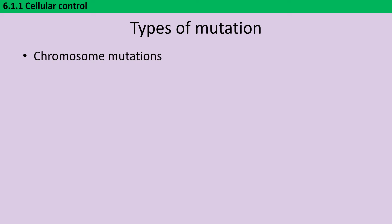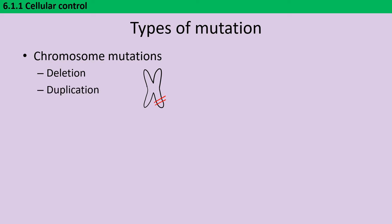Chromosome mutations come in four major types. First, deletions — a whole large chunk of the chromosome is removed. Second, duplication — a particular section that codes for a gene is introduced again, so it's literally in there twice.